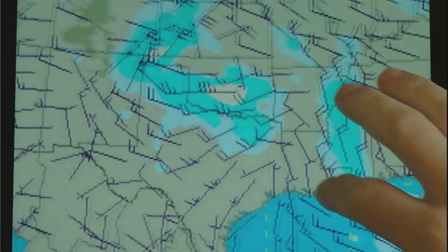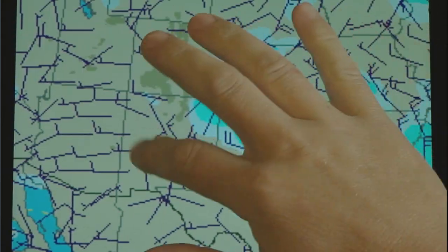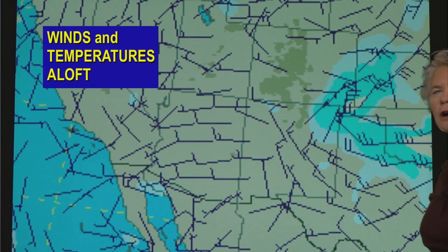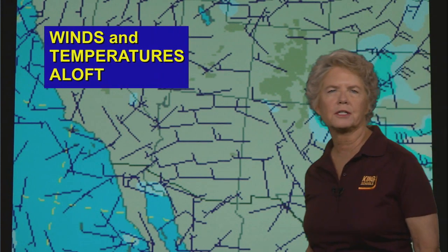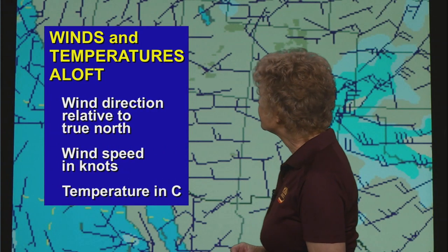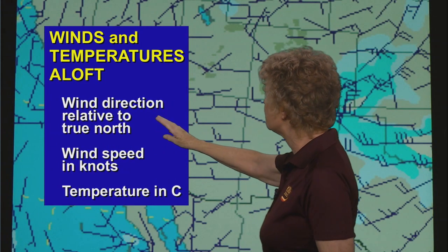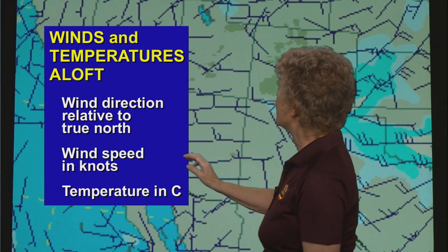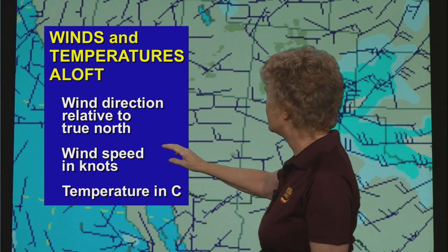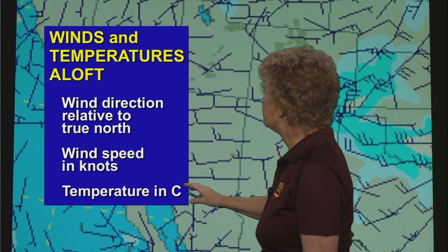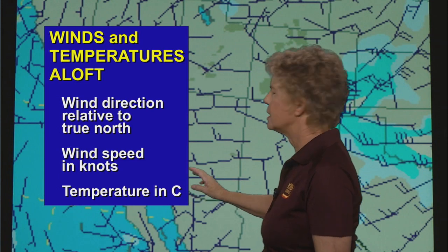Part of what you need to know for your flight planning are the winds and temperatures aloft forecasts. When you get the winds and temperatures aloft forecasts, the wind direction will be given to you relative to true north, the wind speed will be given to you in knots, and the temperature will be given to you in degrees Celsius.